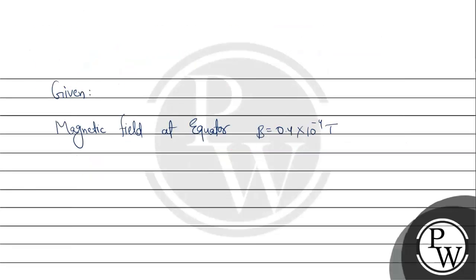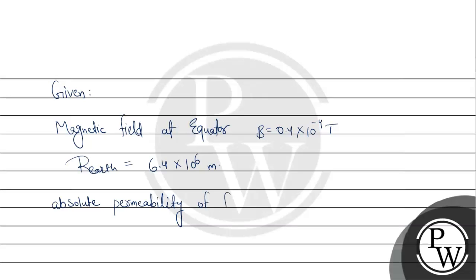Radius of earth is 6.4 into 10 power 6 meter. Absolute permeability of free space is 4 pi into 10 power minus 7.